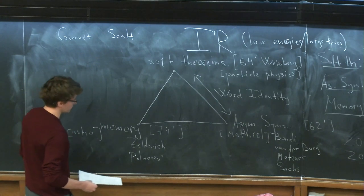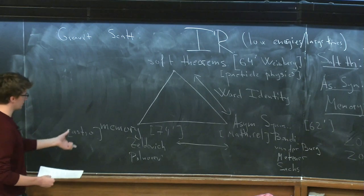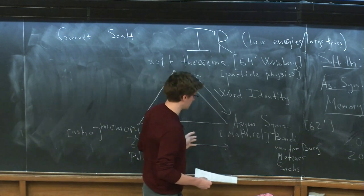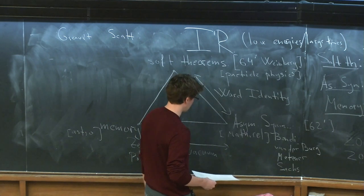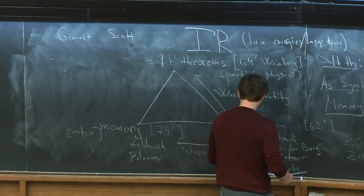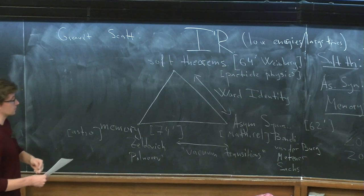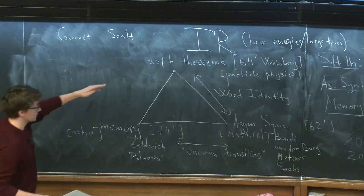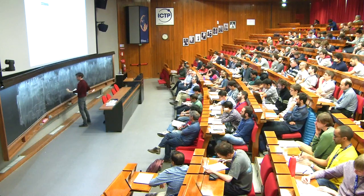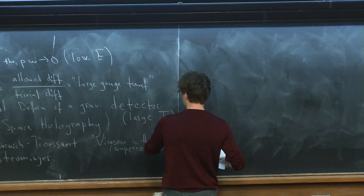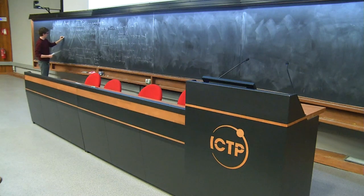Then it was understood that the residual deformations people discuss in astrophysics also naturally appear in the context of asymptotic symmetries — sometimes called vacuum transitions, even though that probably causes more confusion than it helps. So people understood there's a connection between asymptotic symmetries and memories. Memory, as I said, is the residual deformation of the detector — the response of the detector at large times. Soft theorems correspond to low energy, which is large time, and these two are related by a Fourier transform.